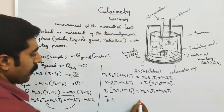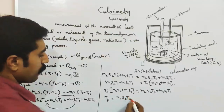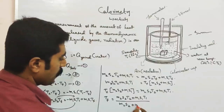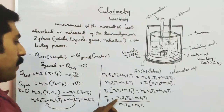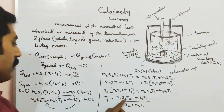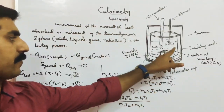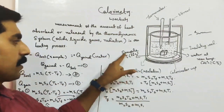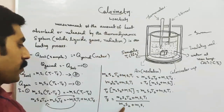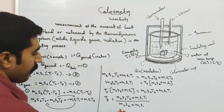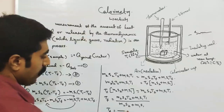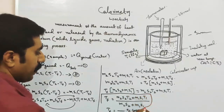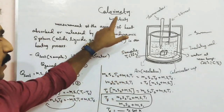Therefore, Tf = (M2S2T2 + M1S1T1) / (M2S2 + M1S1). Here M2 is mass of the second substance (water), S2 is specific heat capacity of water, T2 is initial temperature of water, M1 is mass of the sample, S1 is specific heat capacity of the sample, and T1 is initial temperature of the sample. Tf should be in degrees Celsius or Kelvin. This is an important 5-mark question.